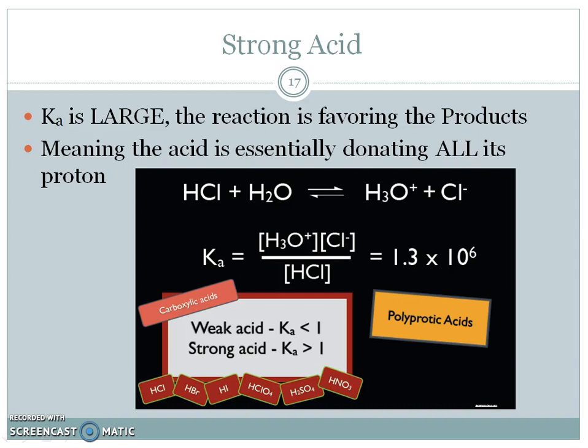A strong acid, however, would be a very, very large Ka, because you'd have mostly ions and very little, if any, molecules, because they dissociate 100%. Down here we have those list of strong acids. So we might want to remember that list again.